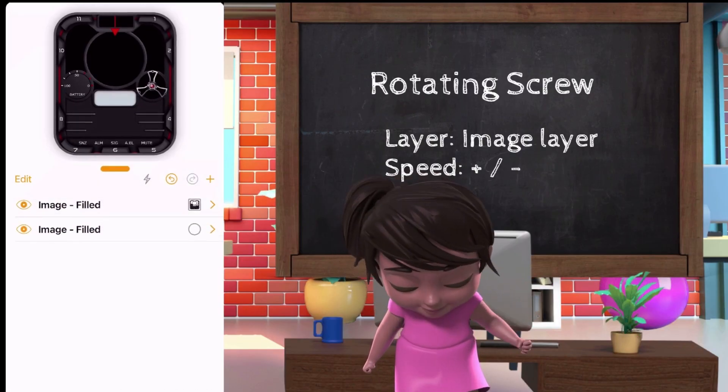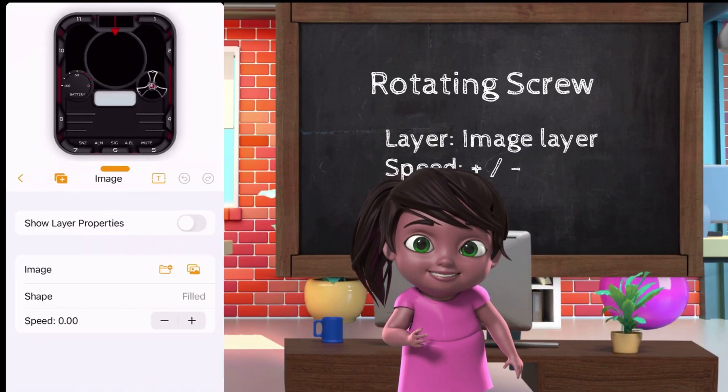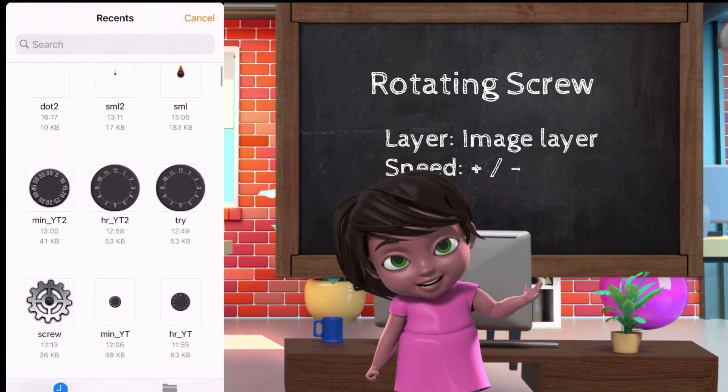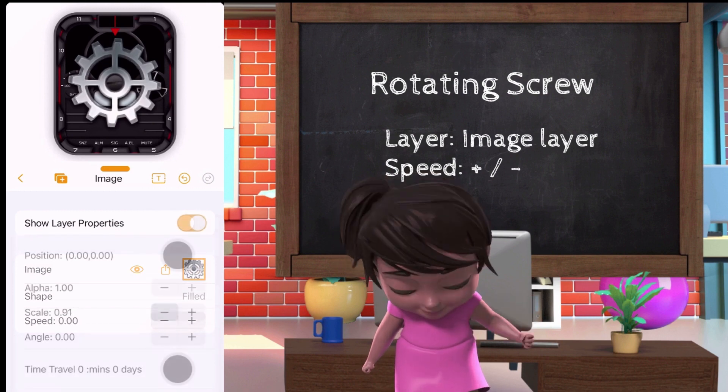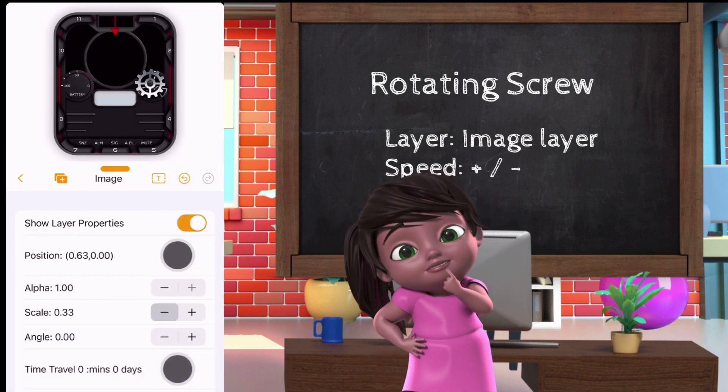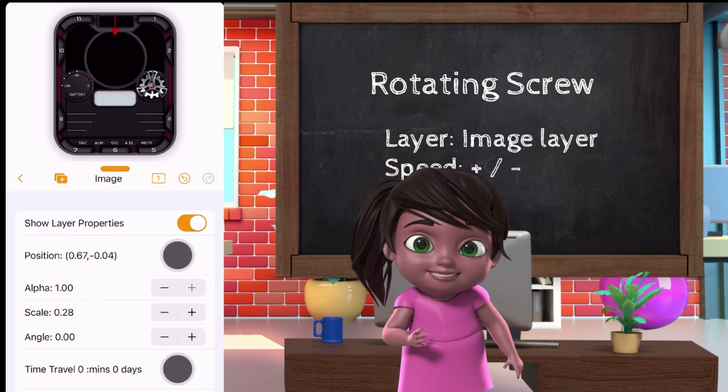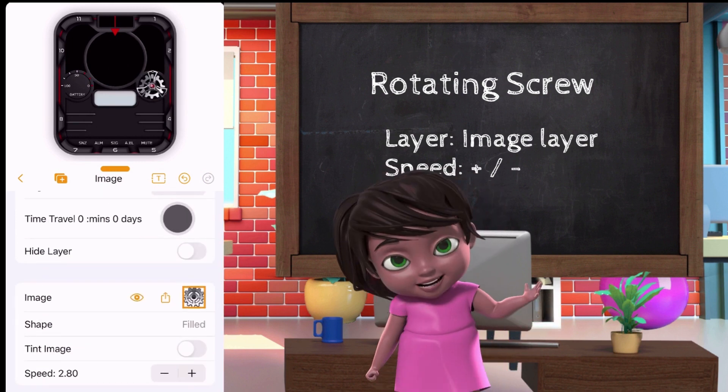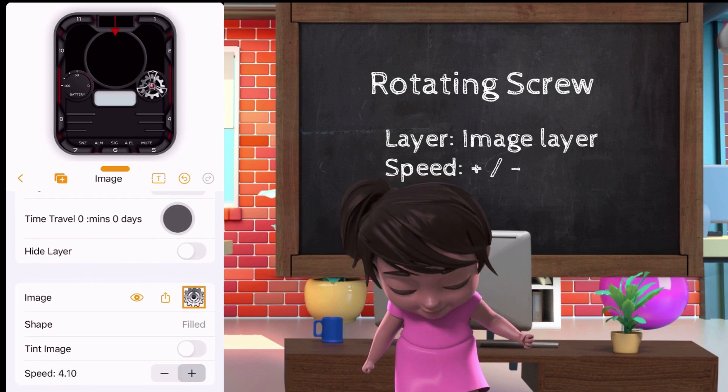Create an image layer, then upload the screw image. You can check my video about uploading and downloading if you are new on Clockology designing. After setting up the size and its location, let's set the speed. Plus sign for clockwise rotation, and minus sign for counter clockwise.